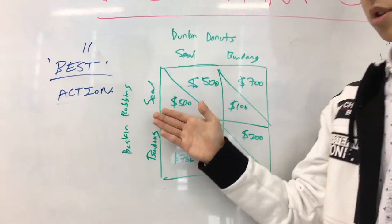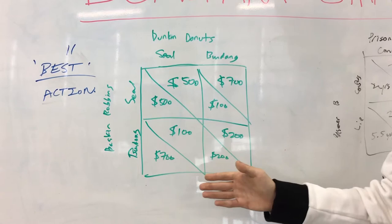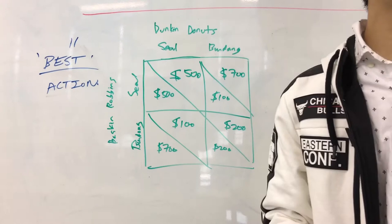If Dunkin Donuts selects Brundang whereas Baskin Robbins selects Seoul, they will each earn $700 and $100 respectively, and vice versa for the case when Dunkin Donuts selects Seoul while Baskin Robbins selects Brundang. The question here is whether there is a dominant strategy.